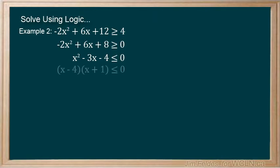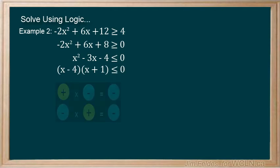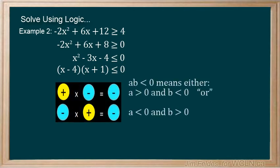And then we factor. And now we consider the logic. Hopefully, from our last example, you realized that to be less than 0, one of the factors has to be negative. They must have opposite signs.